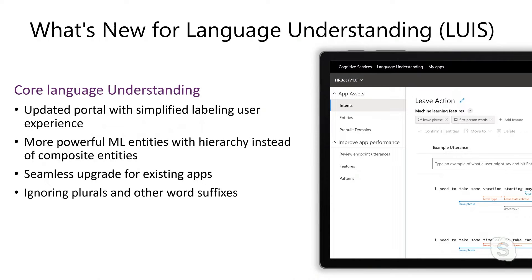We've listened to the feedback from our customers and we've got an updated portal experience. This updated portal makes it easier than ever before to label utterances, update your entity schema, and create features. We've also introduced the ability to add deeper hierarchy to your machine learned entities, which gives you the capability to recognize much more complex intents and entities and to reuse them across your application.